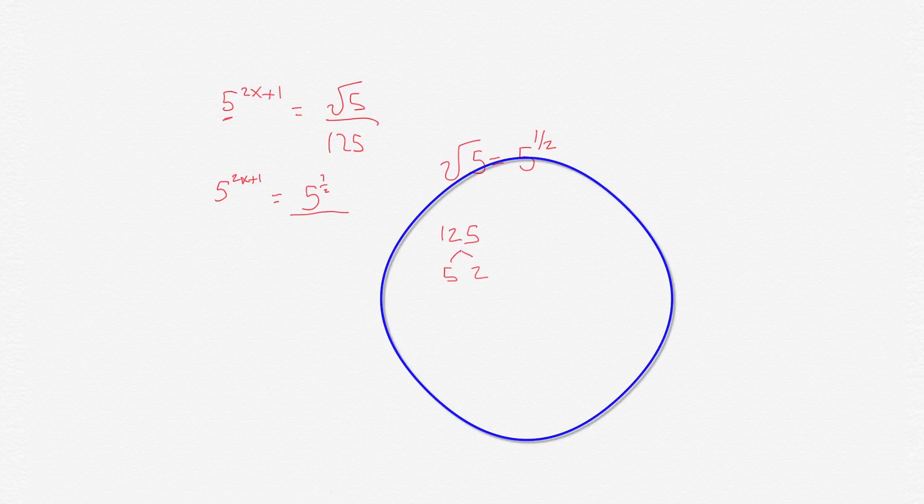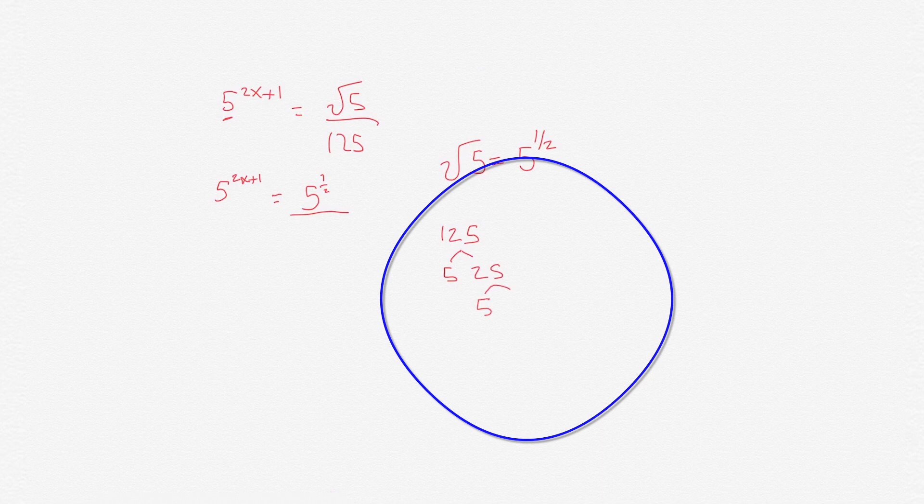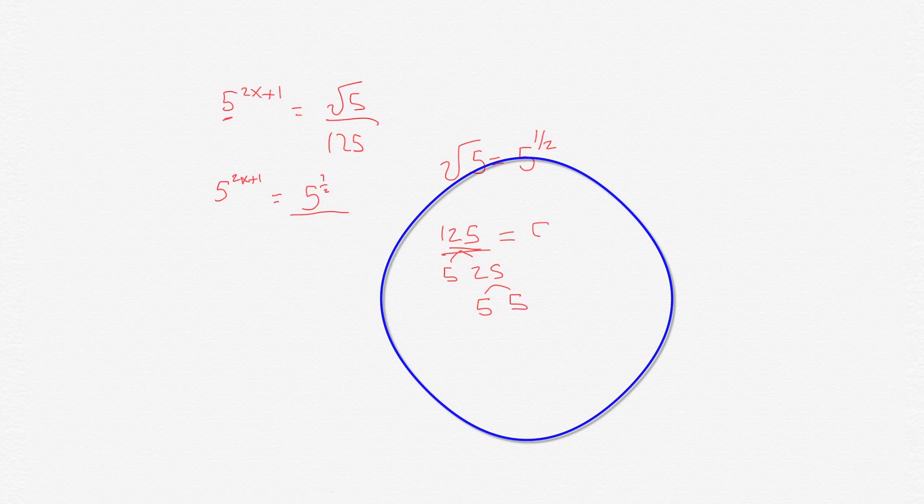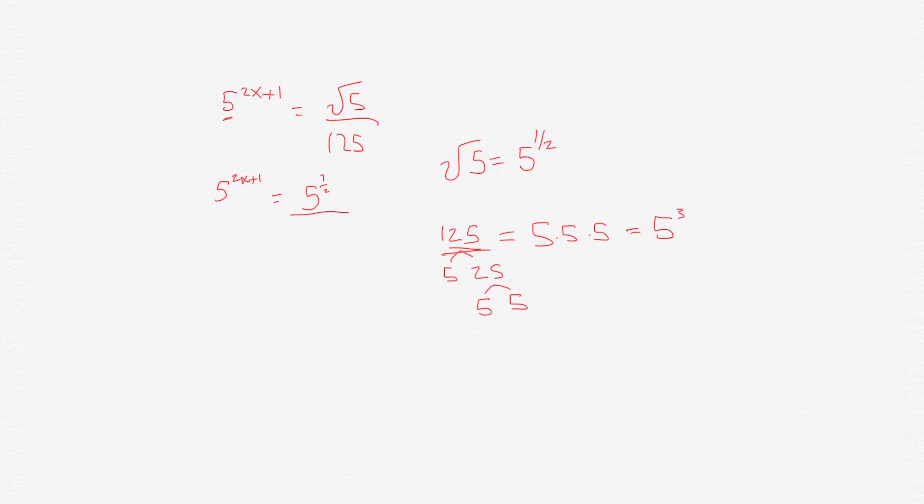Now 125 is 5 times 25, and 25 is 5 times 5, so 125 is 5 times 5 times 5 or 5 cubed, 5 to the 3.